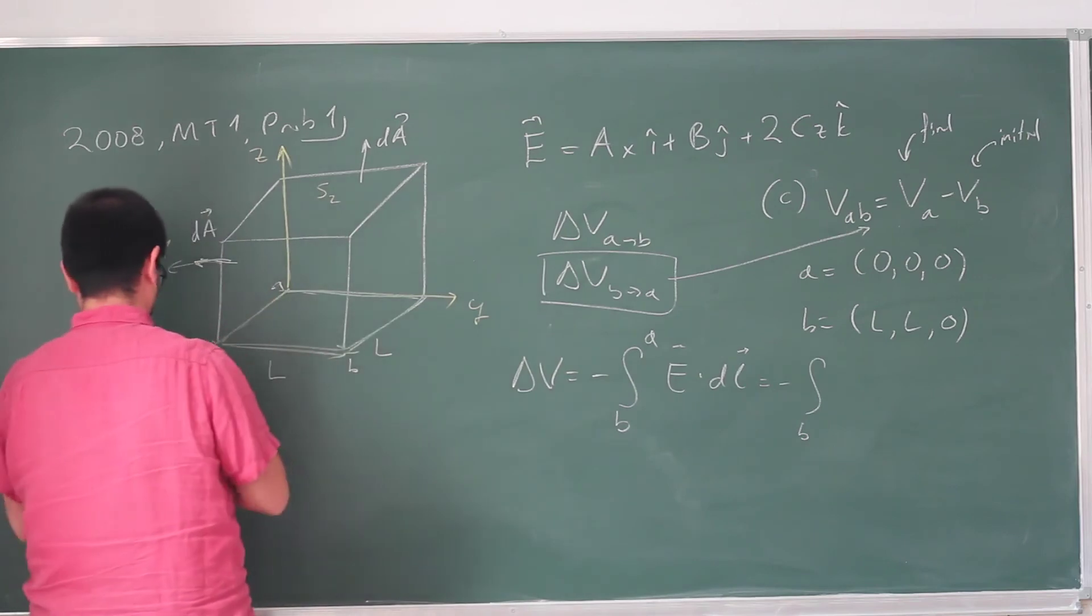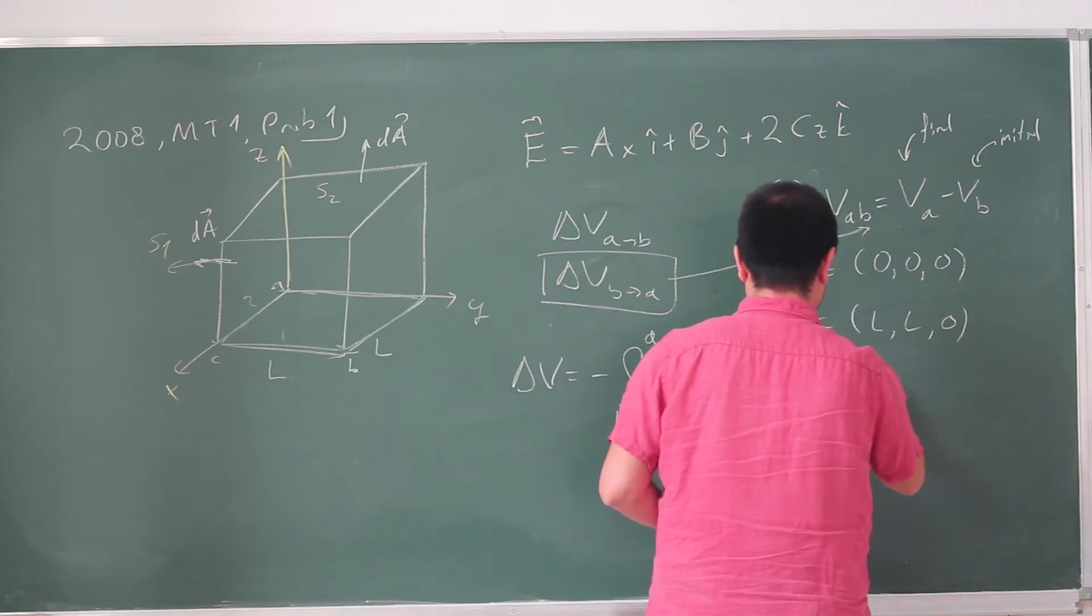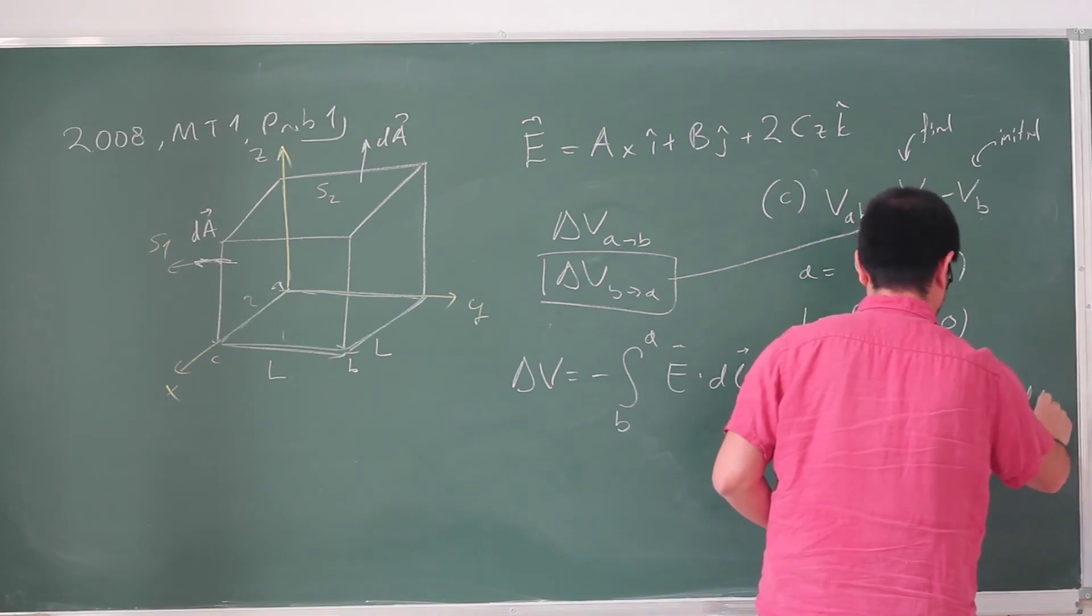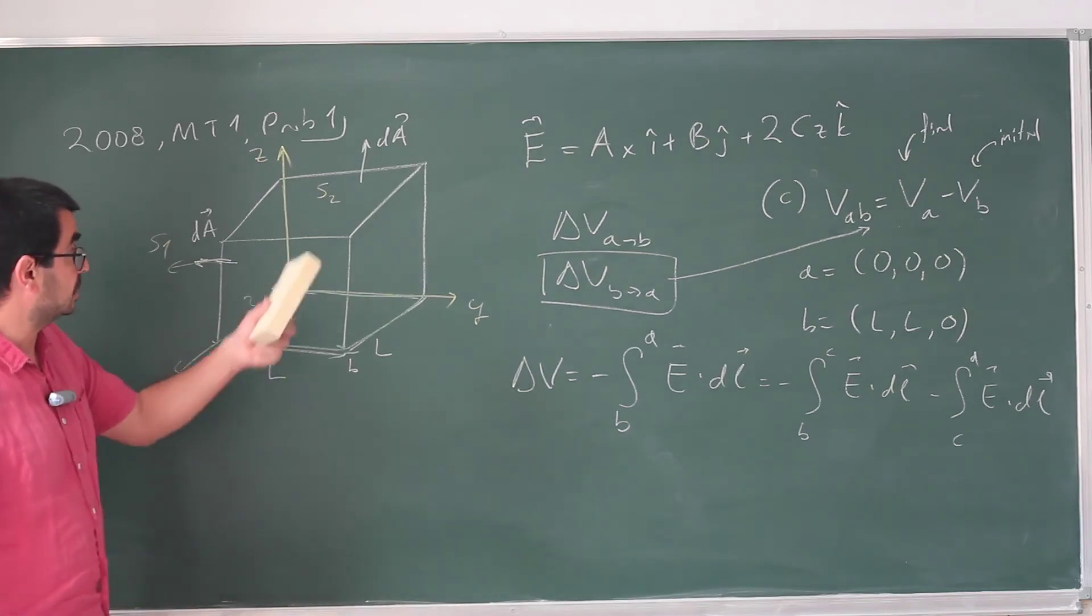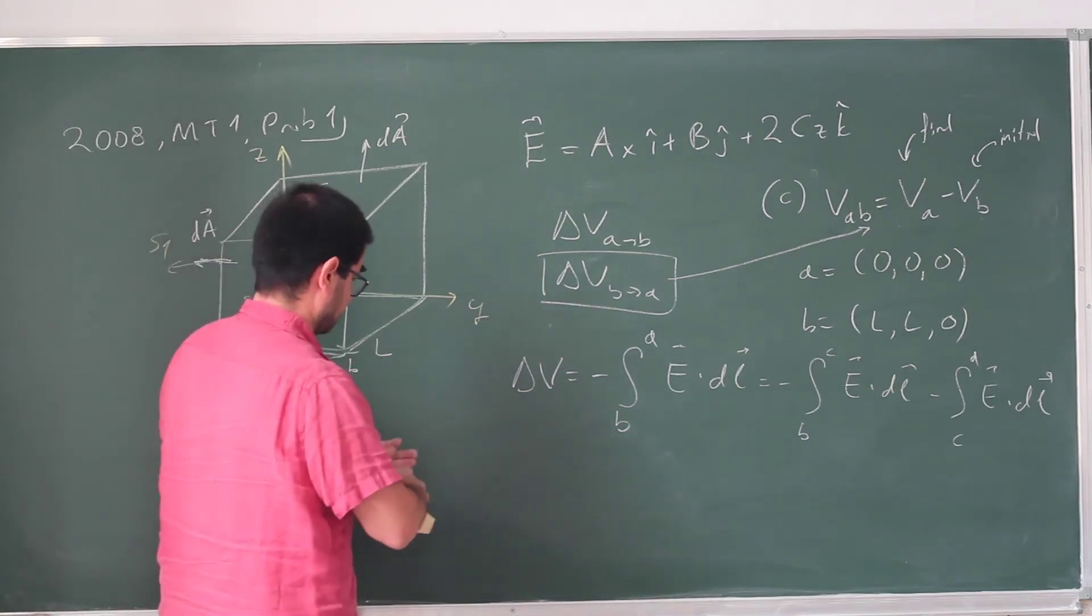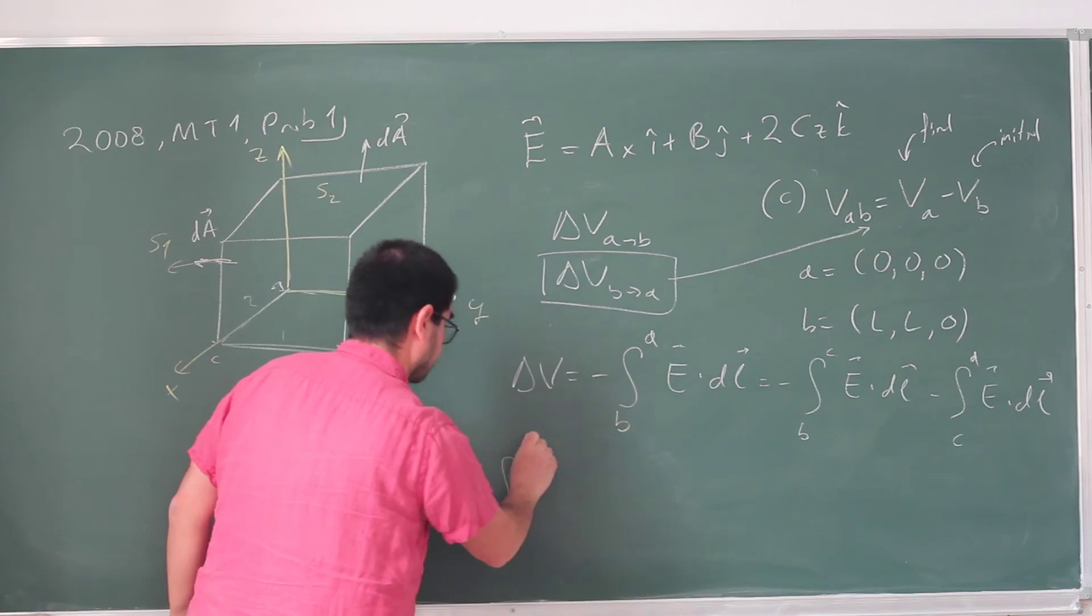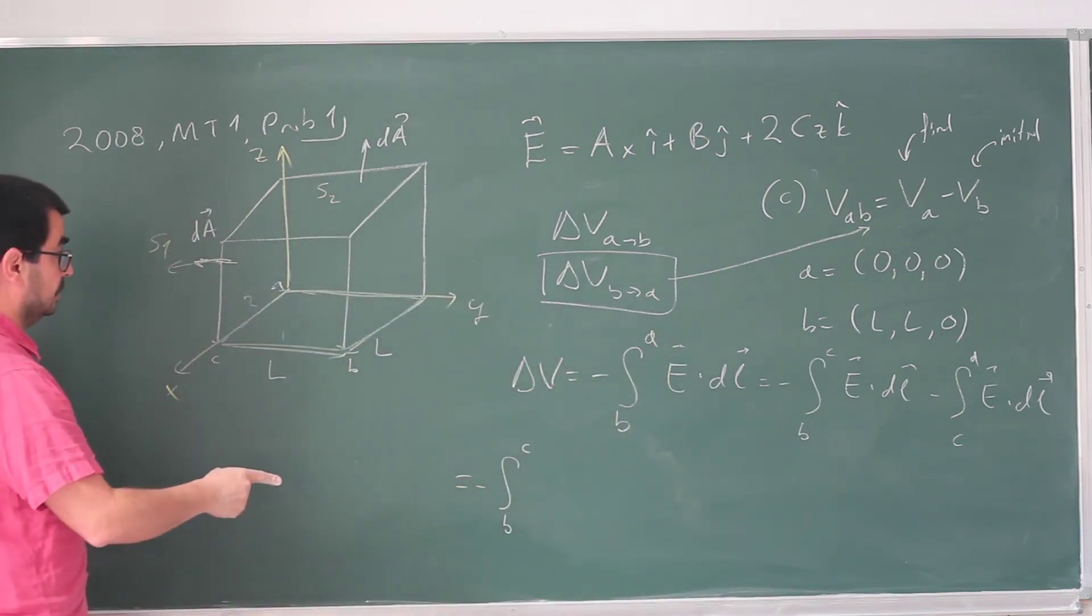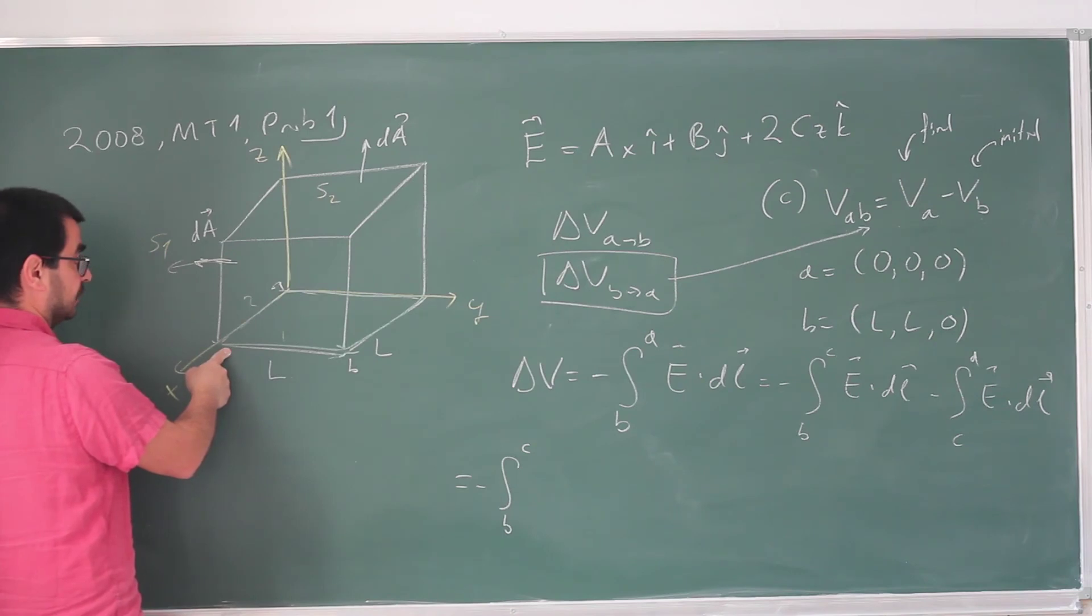So this is the first one, this is the second one. So minus integral B to C E dot dL minus C to A E dot dL. And you can write these integrals because they are simple expressions. Let's do the first one. From B to C, the electric field there is... We're going from B to C. The only surviving component of the electric field is going to be the y component. So that's just B.